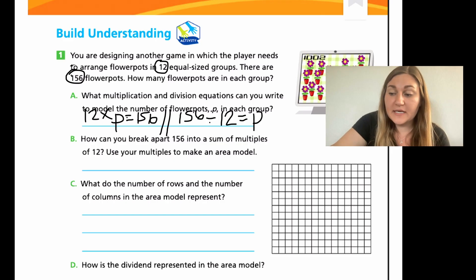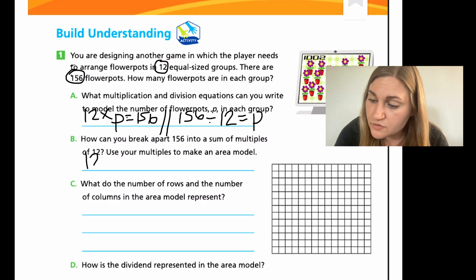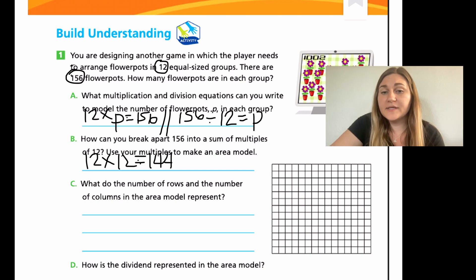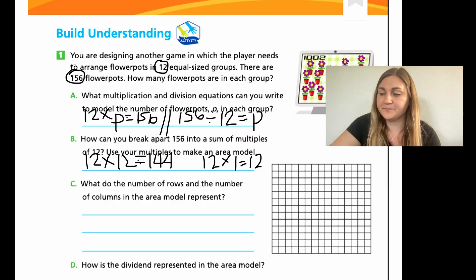All right. So, in B, there are multiple different ways to do this. The way that my brain personally works is to get the biggest chunk out of the way. So, I know that the biggest multiplication problem I have memorized is 12 times 12 is 144. All right. So, let me write that down. 12 times 12 is 144. And I know that if I'm going to 156, all I have left is 12. So, then I would just need one more. So, 12 times 1 is 12. All right. So, that would be 12 and 1. That would be 13 groups.